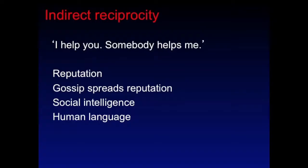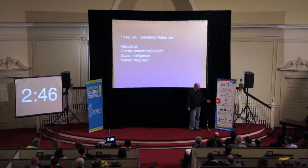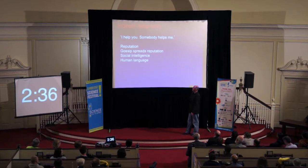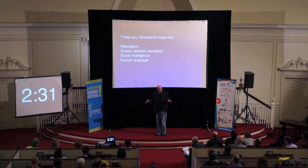Another mechanism is indirect reciprocity: I help you, somebody helps me. Indirect reciprocity is based on reputation. A display of indirect reciprocity can be found here — MIT gave a lot of money and Harvard gave only a little amount. Gossip spreads reputation, and indirect reciprocity has to do with social intelligence and human language. My friend David Haig at Harvard said: for indirect reciprocity, you need a face; for indirect reciprocity, you need a name.